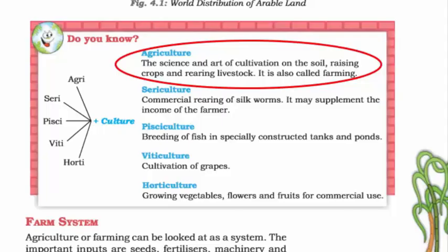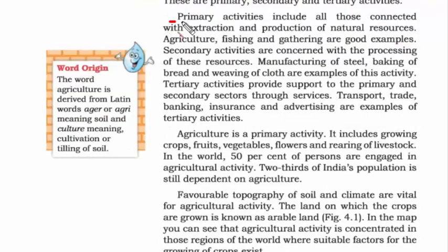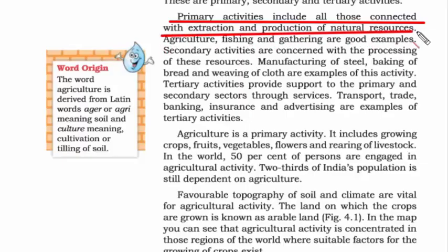There are three types of economic activities — actually four, but here we are talking about just three. These are primary, secondary, and tertiary activities. The fourth one is called quaternary. The definition of primary activity is anything that includes all those connected with extraction and production of natural resources. The best way to remember this is: to start any activity you need resources, and most resources are naturally produced. Any activity where you put your hand directly into nature's resource is called a primary activity.